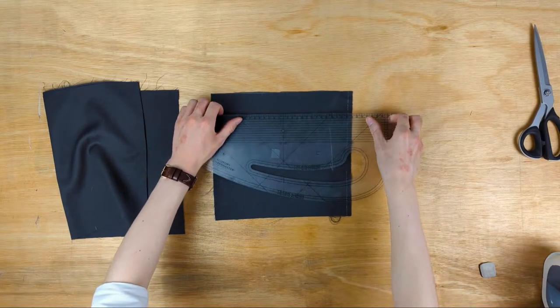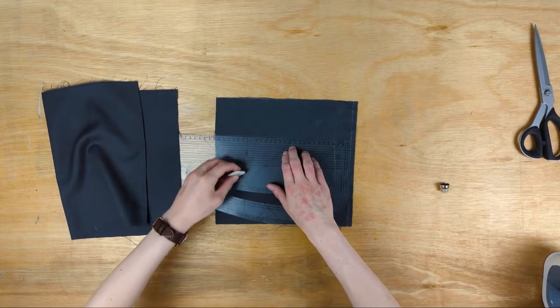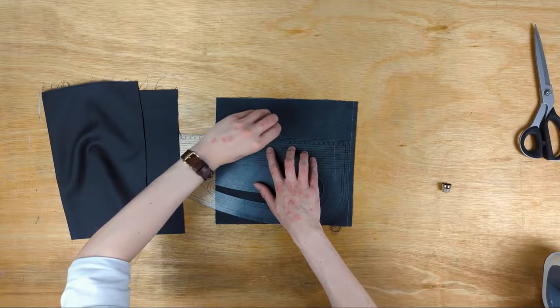Mark the pocket line onto some fabric. Usually on a jacket the pocket will have a slight incline so that it's parallel to the hem. I'll just make it straight for now.